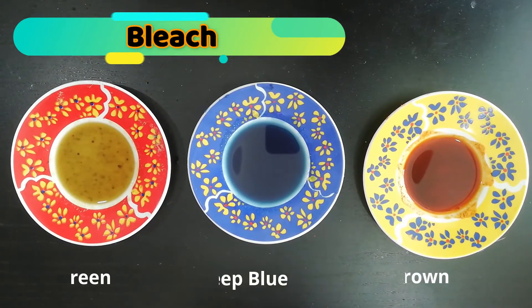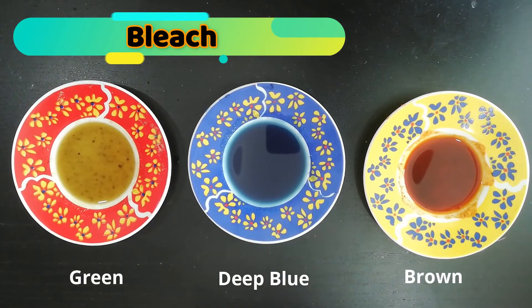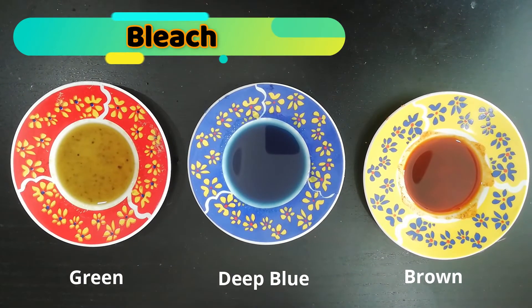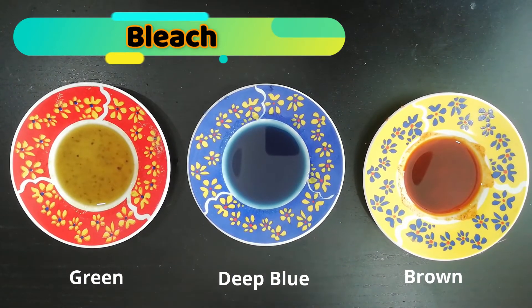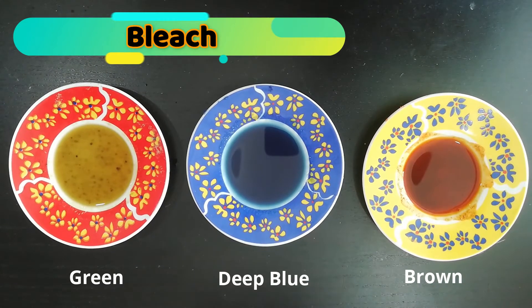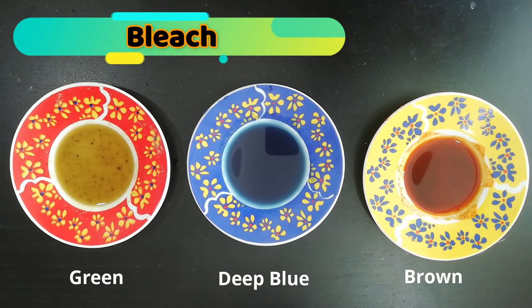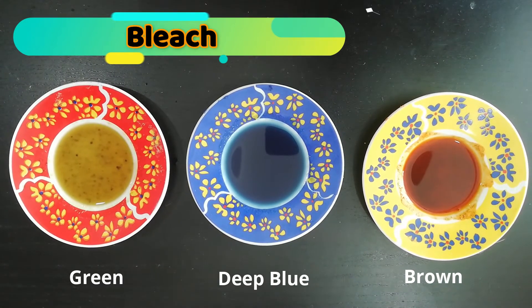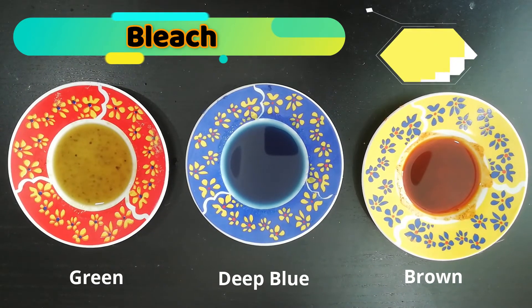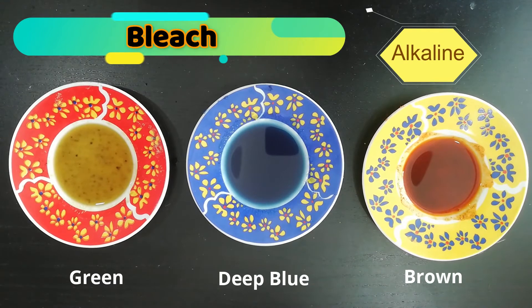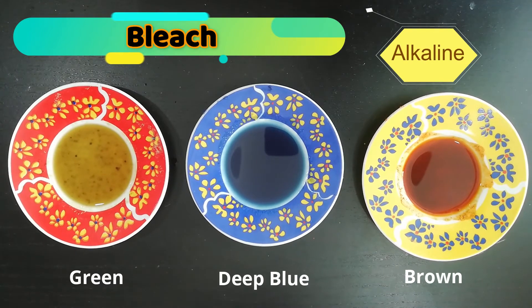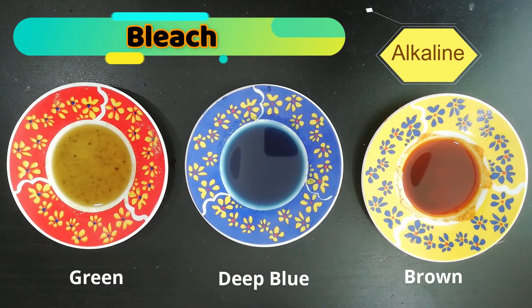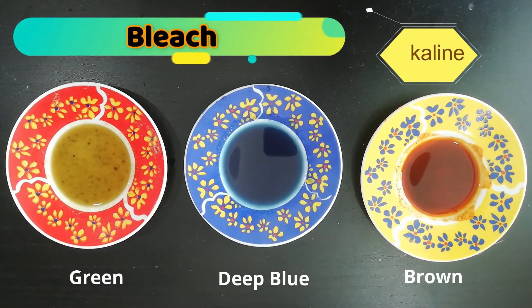Let's try with bleach. The hibiscus juice turns green, the purple cabbage juice turns deep blue, while the turmeric water turns very brown. This shows bleach is extremely alkaline.